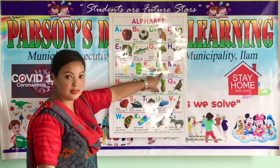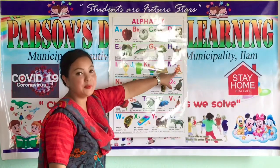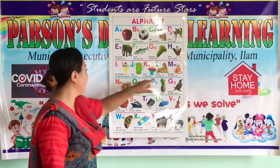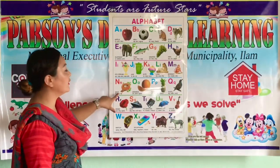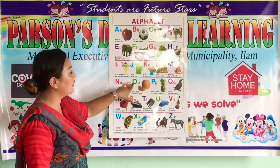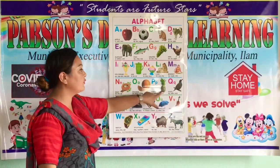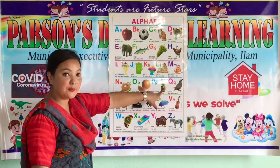L for Lion. M for Monkey. N for Nest. O for Orange. B for Pineapple.